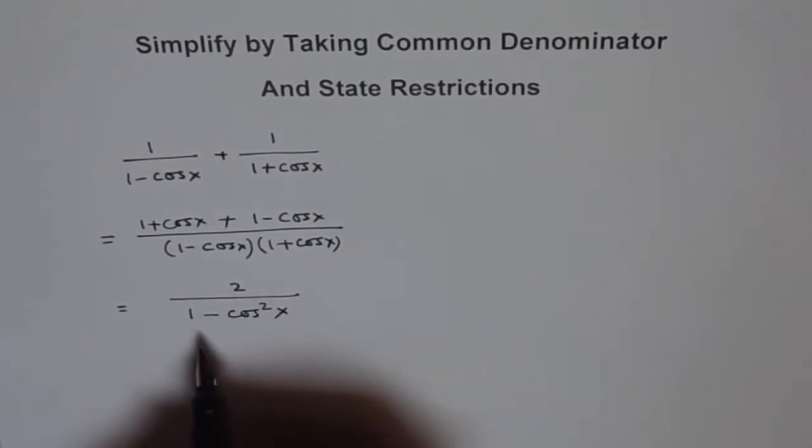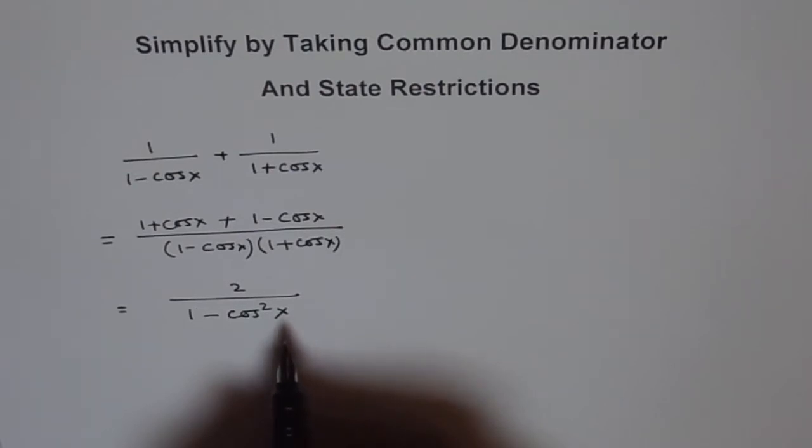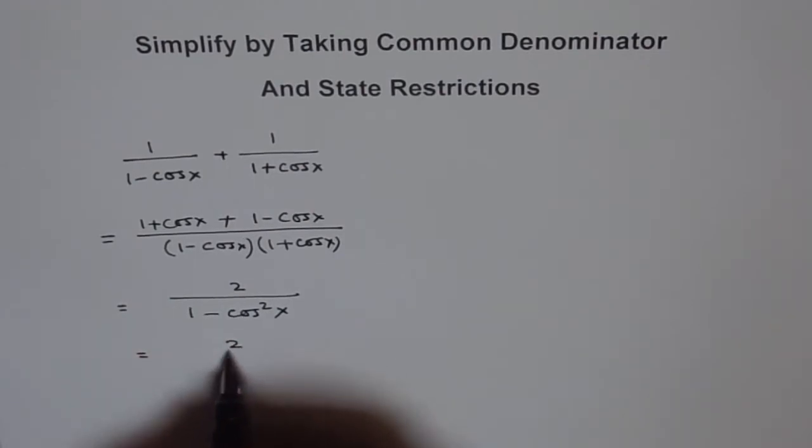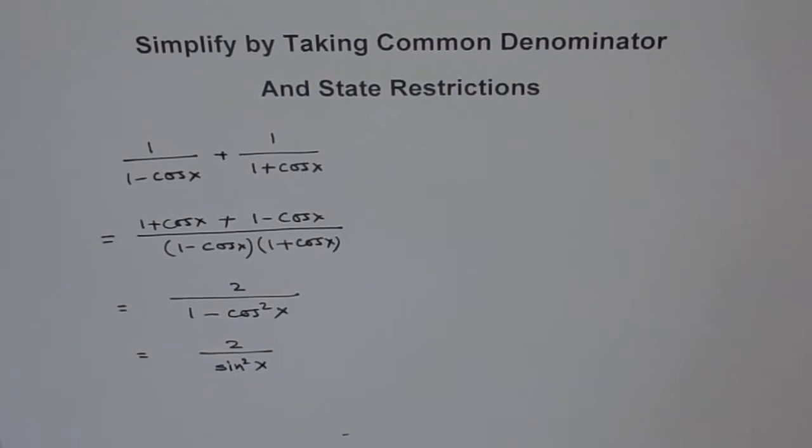And as you know from your identities, the trigonometric simple basic Pythagorean identity, 1 minus cos square is sin square x. So we get 2 over sin square x. So see how we simplified this.